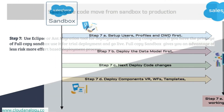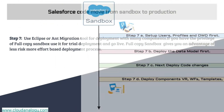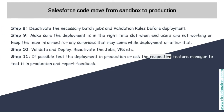Step eight: deactivate the necessary batch jobs and validation rules before deployment. If they are active and colliding with the same object or the same code, they will prevent your code from being deployed in production.